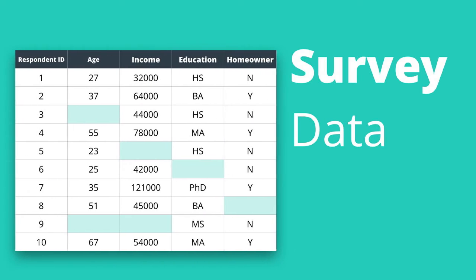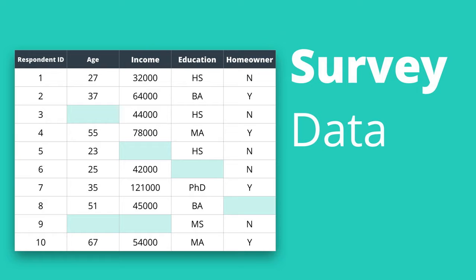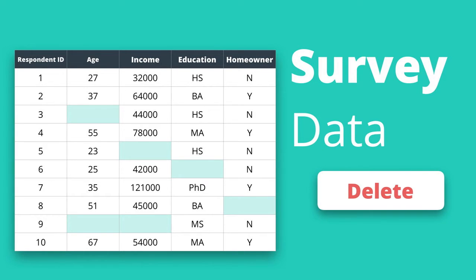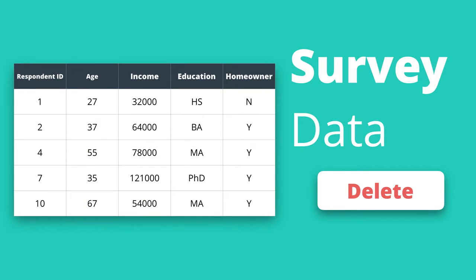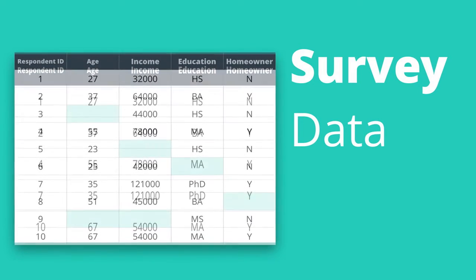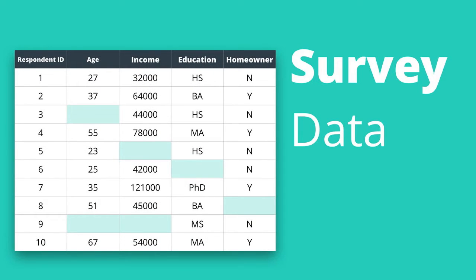As a quick refresher, we've been working with example survey data that has missing values. One way to deal with these missing values is just to eliminate any observations that have missing data. But because of the negatives related to that, we might want to keep all of the observations and just try to fill in the blanks, so to speak. The important thing here is to provide the fake data so that our model can get closer to what's actually true.